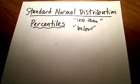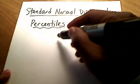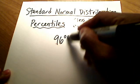If you are told that you scored, maybe on a standardized test like the SAT or the ACT, your IQ score, whatever it might be, that you are in the, let's say, 96th percentile.